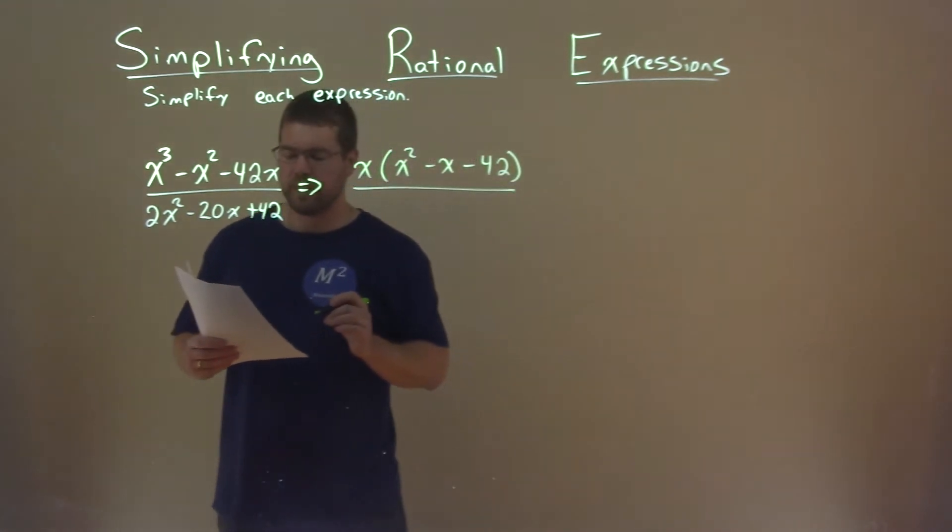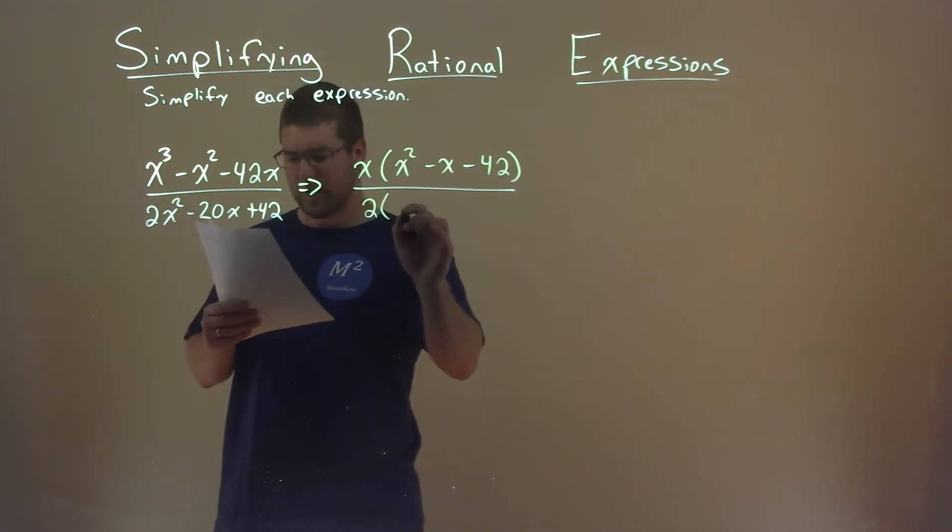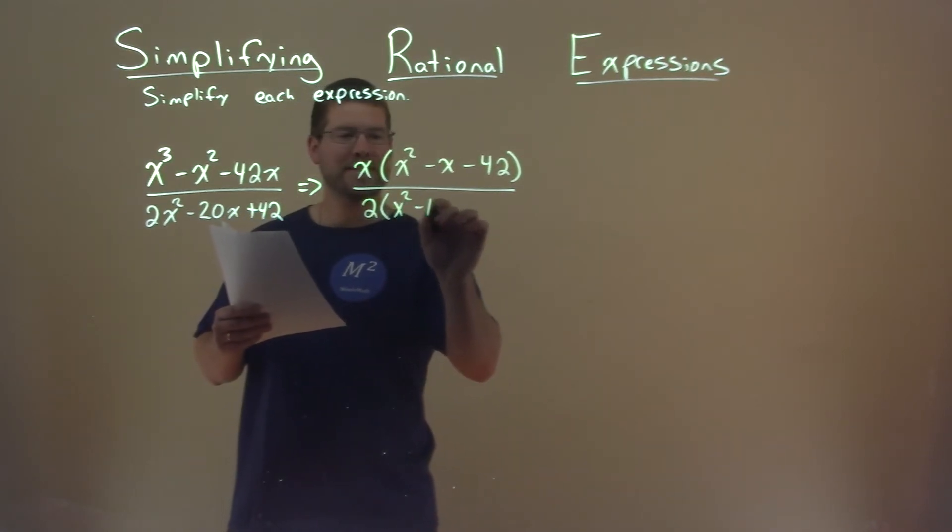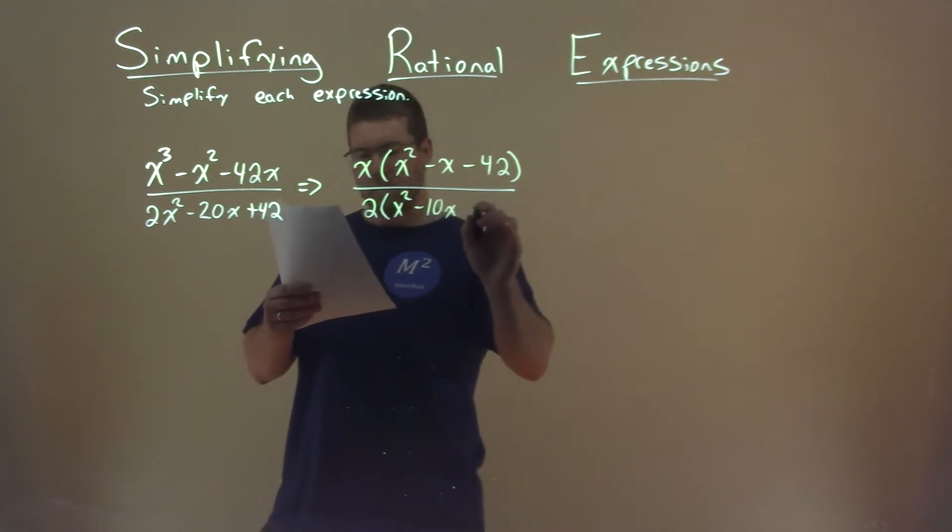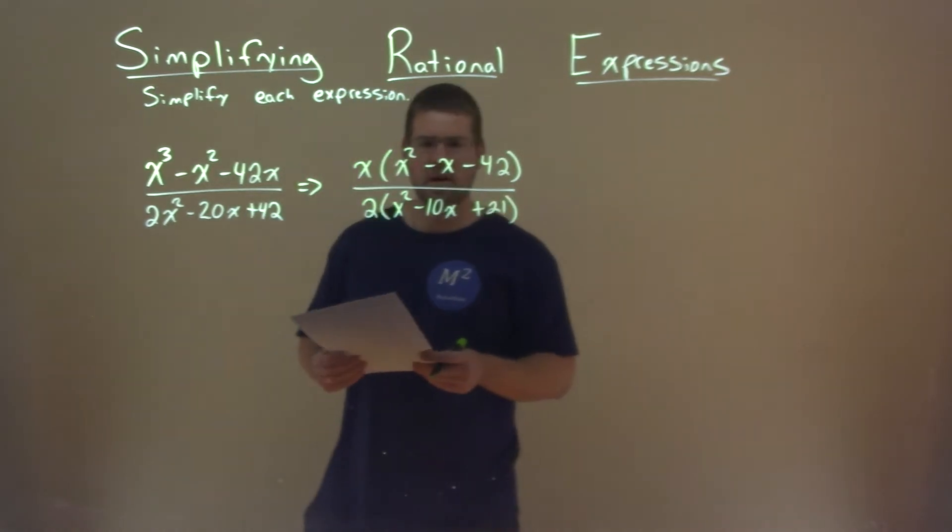What about the denominator? A 2 goes into all parts as well, so if I pull out a 2, I'm left with x squared minus 10x plus 21.